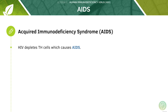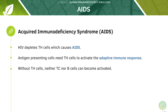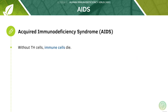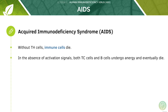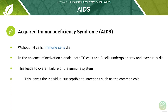T helper cells are a crucial component of the human immune system. Antigen-presenting cells need T helper cells to activate the adaptive immune response. Without T helper cells, neither the cytotoxic T cells nor the B cells can become activated. In the absence of activation signals, both cytotoxic T cells and B cells undergo apoptosis and eventually die, meaning the overall immune system will fail, leaving individuals susceptible to infections such as the common cold.